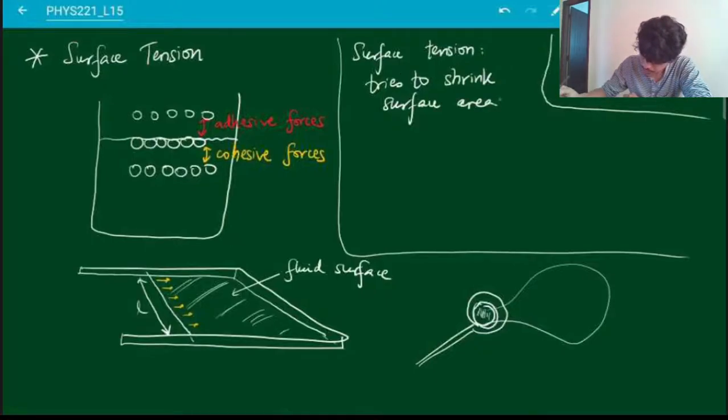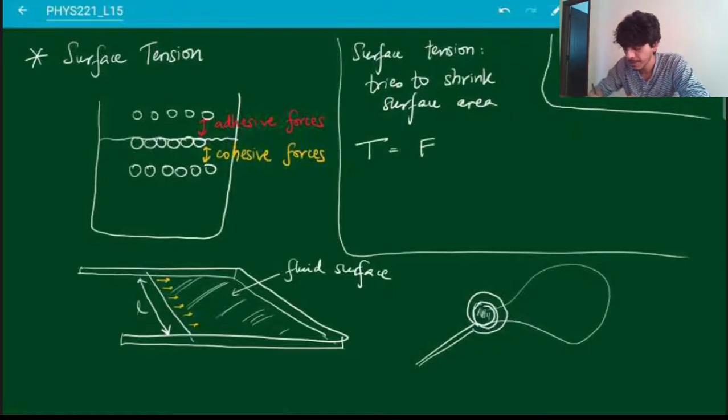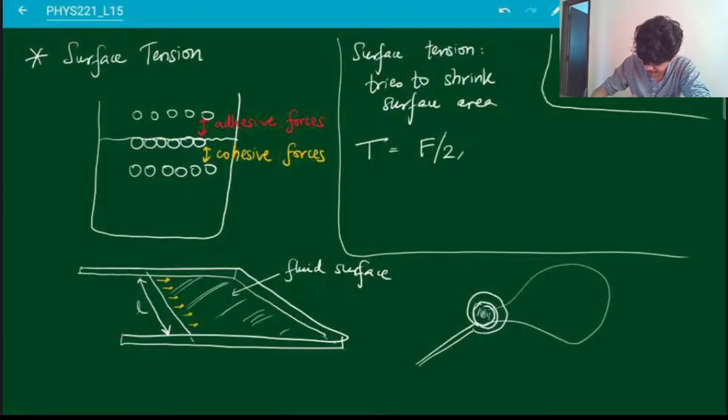We define the surface tension T as the force per unit surface length. So over here, the surface between the fluid and the outside is L, so this is F divided by 2L. Why factor of 2? Because the fluid typically has two surfaces—an upper surface and a lower surface—so L from the top and L from the bottom.